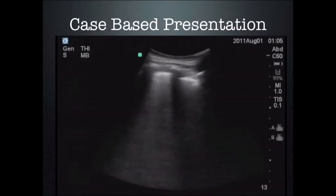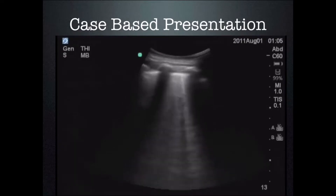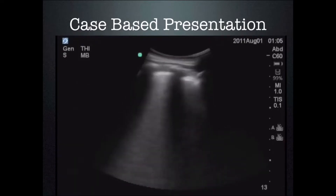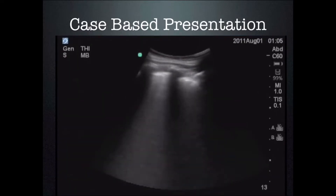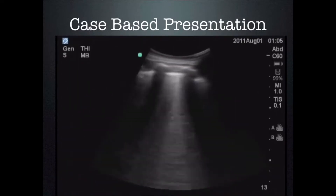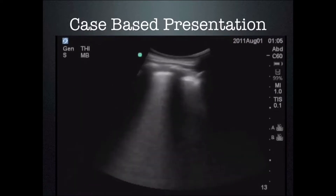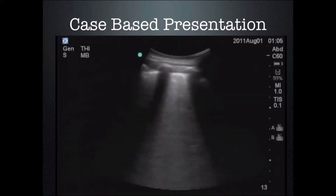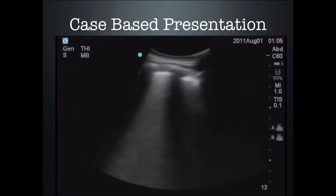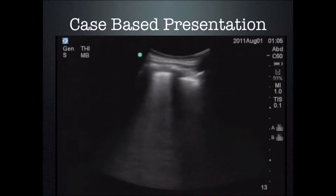Here is our patient's ultrasound. We're using a curvilinear abdominal probe placed on the patient's chest across the ribs. We've identified our ribs and our pleural surface — it is moving — and then we see an artifact arising from the pleura and going off the screen.